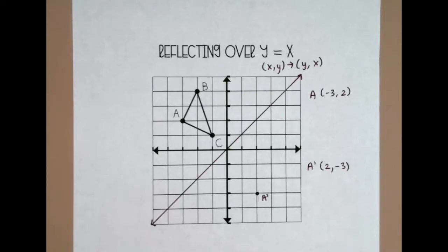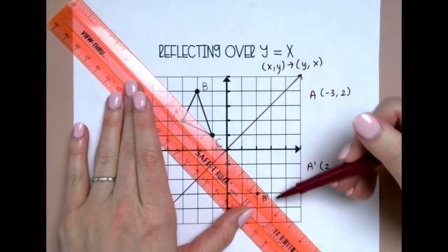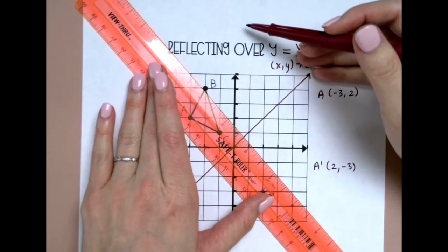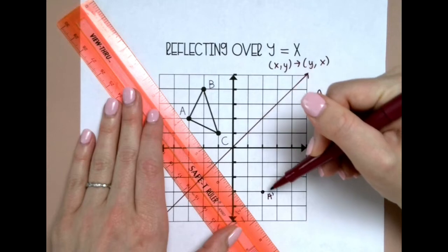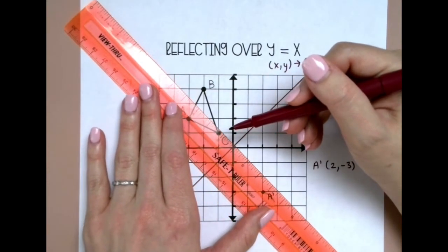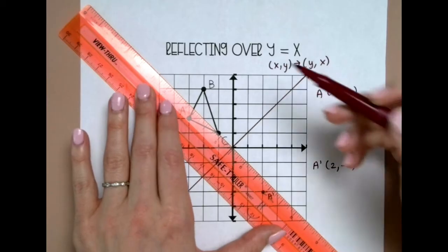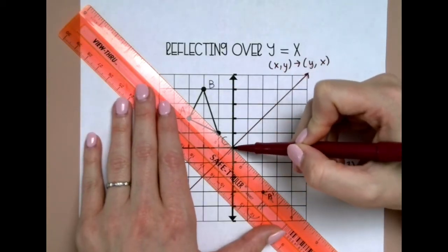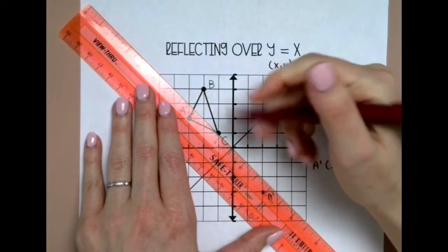If you forget the coordinate rule or you don't want to memorize it, the other way you can reflect over diagonal lines is to count. When you count, you want to go perpendicular to the line of reflection. If you want to get a ruler, that might make it a little bit easier. I always say you want to count diagonally through the block, so from corner to corner. So I'm going to do C - see how this is perpendicular to my line of reflection. Right now C is one diagonal block away, and I want to go one diagonal block away in the opposite direction.